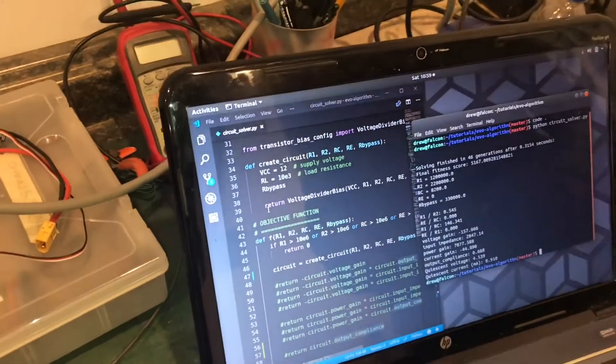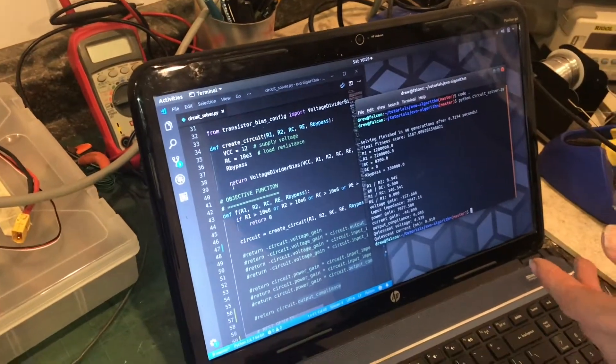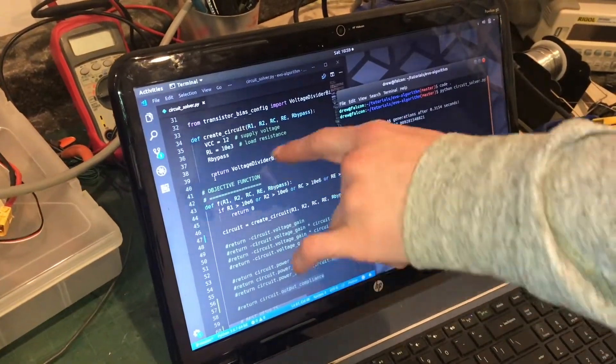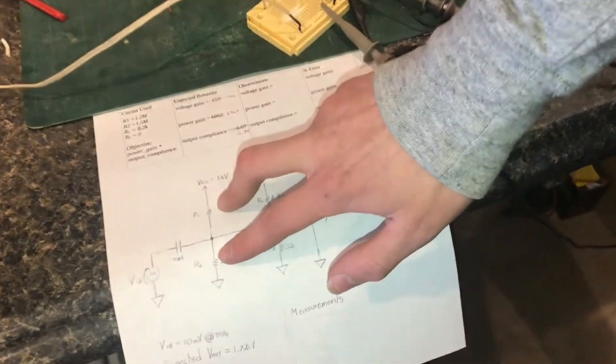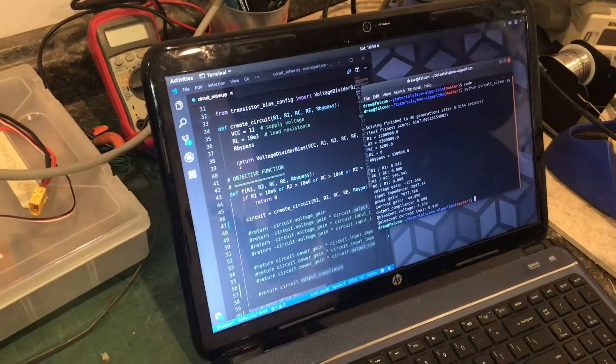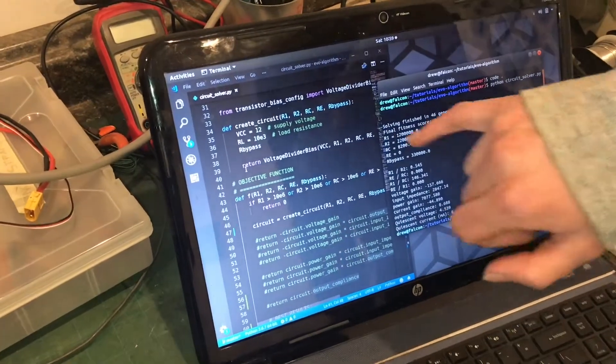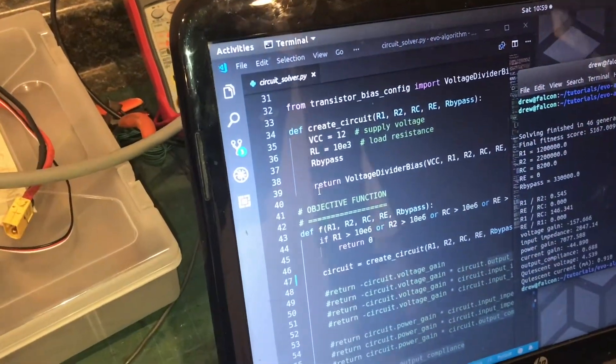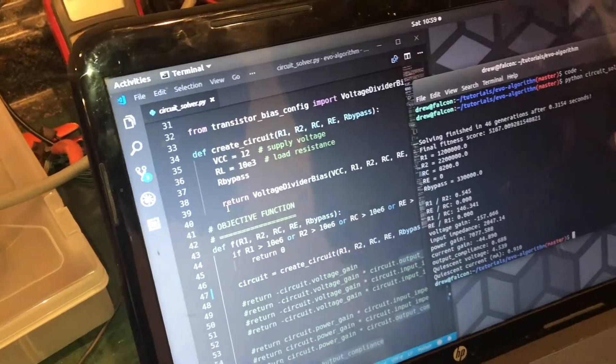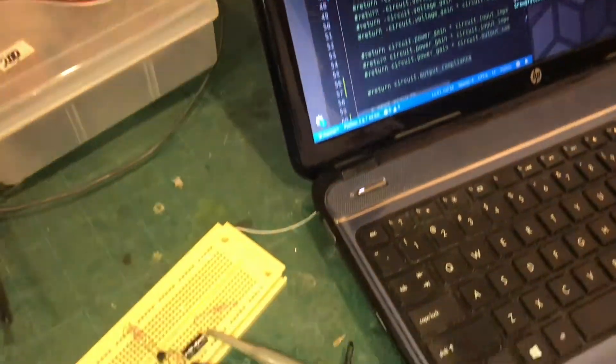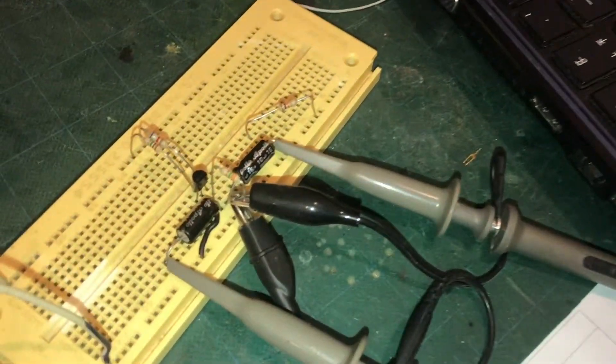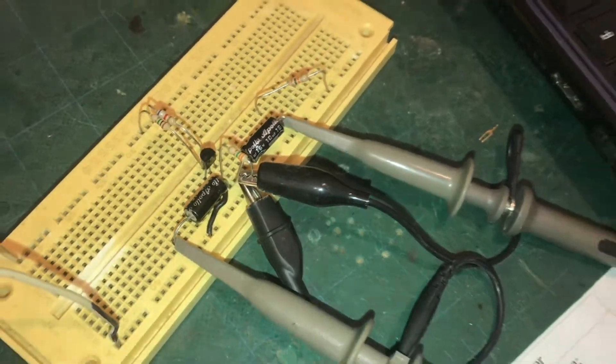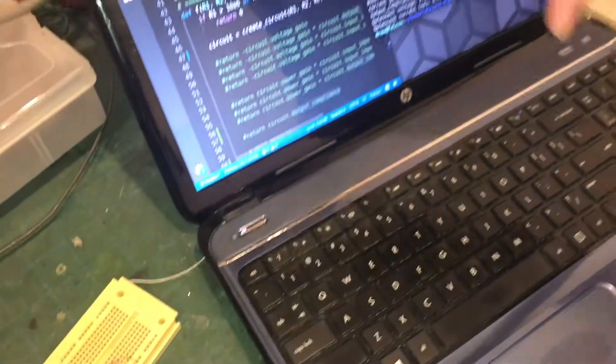You give it the general form of what the circuit you want to look like. For example, you may say build me a single transistor amplifier with a voltage divider bias. It's an existing known configuration, but then you tell it I want you to find, I want you to basically calculate what components I should use in my class A amplifier to give me the optimum results.